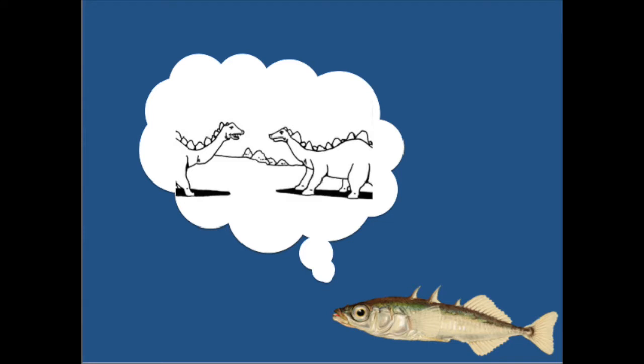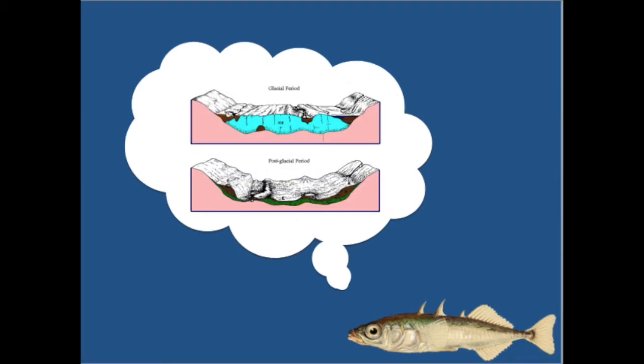About 10,000 years ago, around the time of the last ice age, all stickleback fish looked pretty much like me, with long pelvic spine structure. Then a glacier slid down over North America, forming a bunch of lakes and rivers that lead to them from the ocean. Small groups of marine sticklebacks began migrating up the rivers into the lakes.